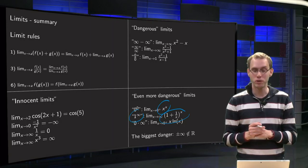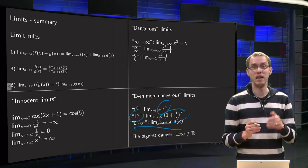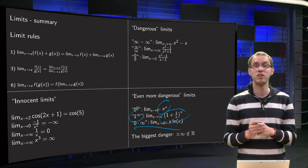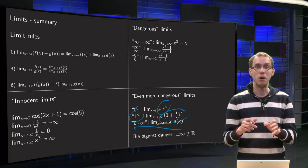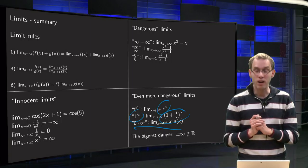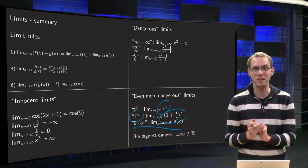Or 0 times infinity, like x times ln of x. X goes to 0, but ln blows up, so what can we do in that case? So those are even more dangerous limits, which we will learn, but we don't know yet how to do that.